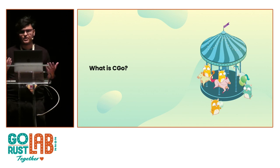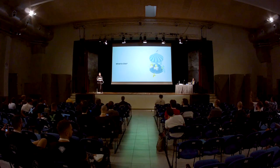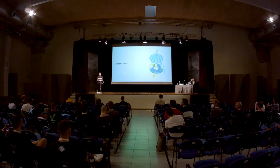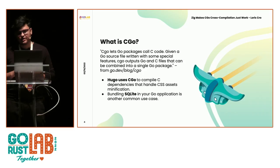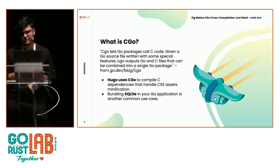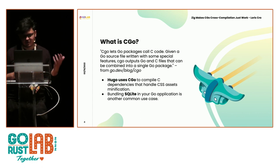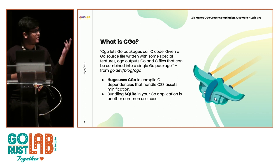So let's start from the beginning. What even is CGo? Out of curiosity, can you please raise your hand if you have ever compiled something with CGo enabled equals one? A few hands — not everybody. So what is CGo? CGo is a way for Go to depend on C or C++ code. Give it a Go source file with specific lines in it, and you can have Go call C functions, roughly speaking. A common use case, as an example, is Hugo.